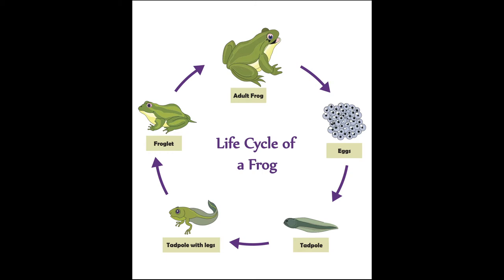Three: tadpoles grow feet. Four: they get a little bigger and lose the tail and start to look more like a frog — this is called the baby frog. Five: eventually they grow big enough that they lose their tail.